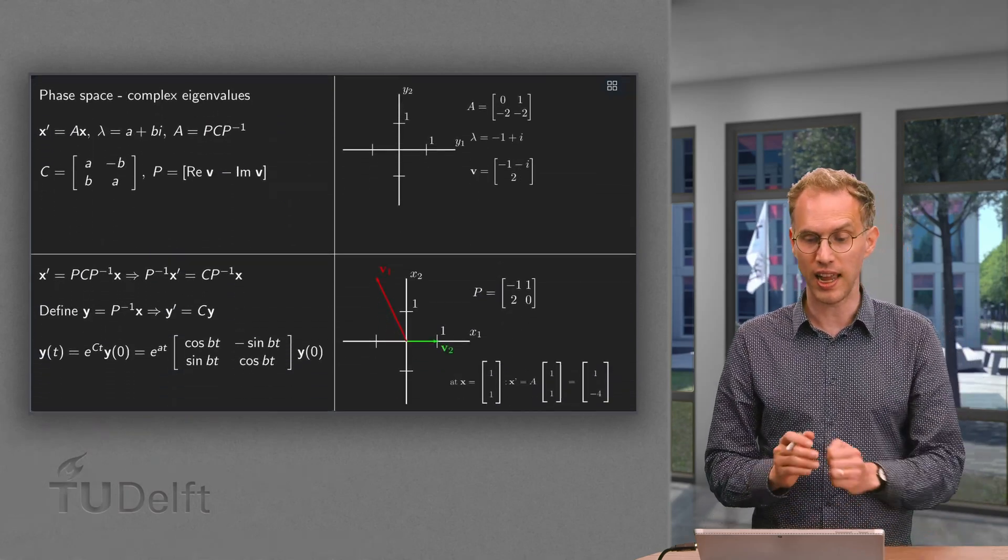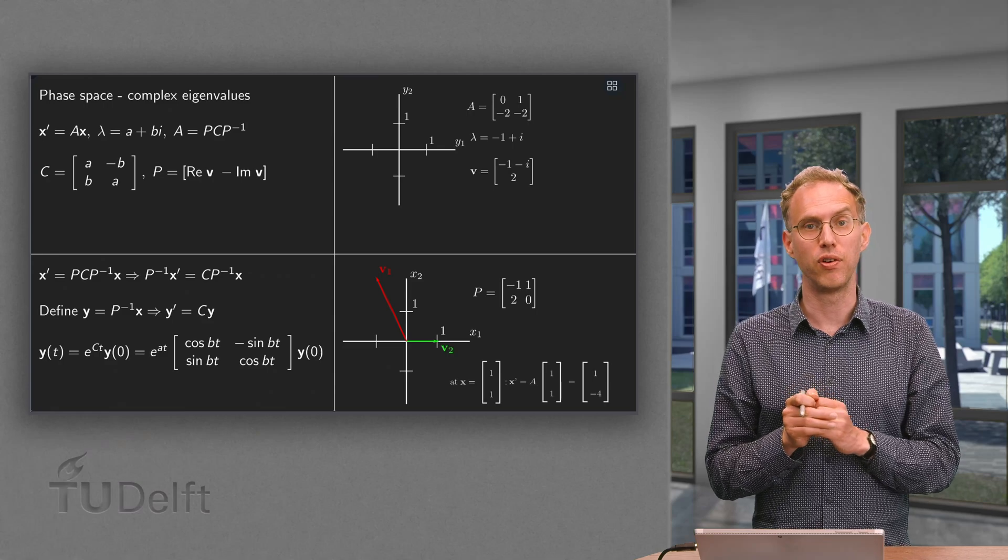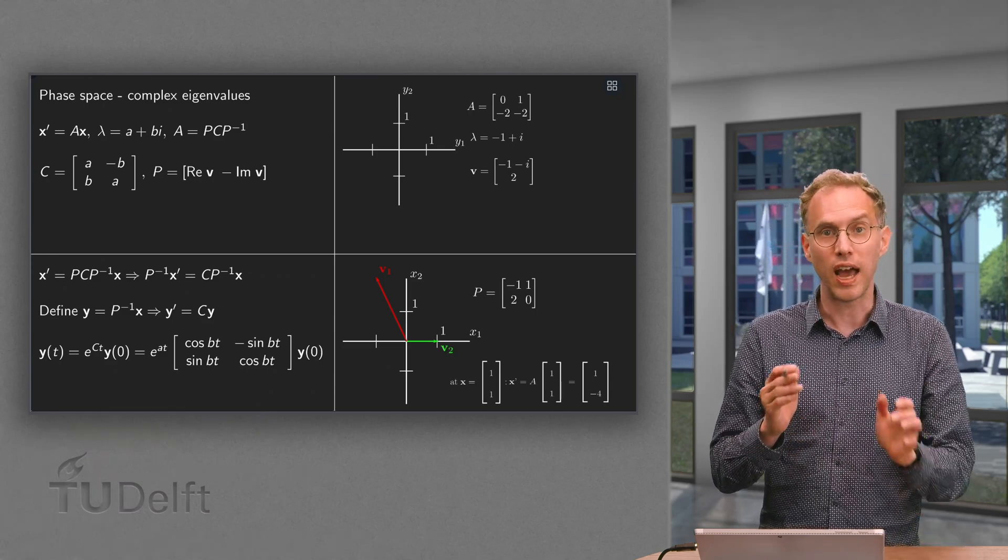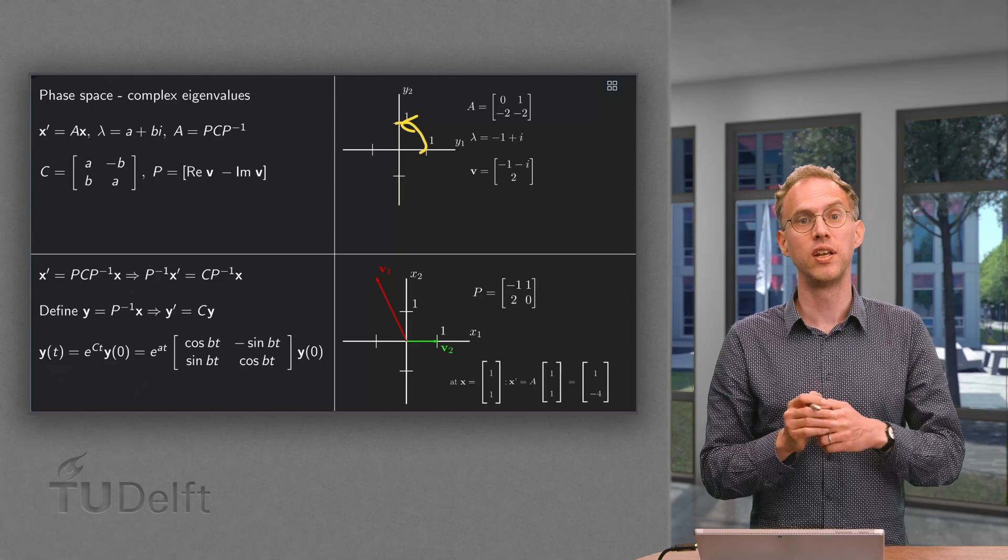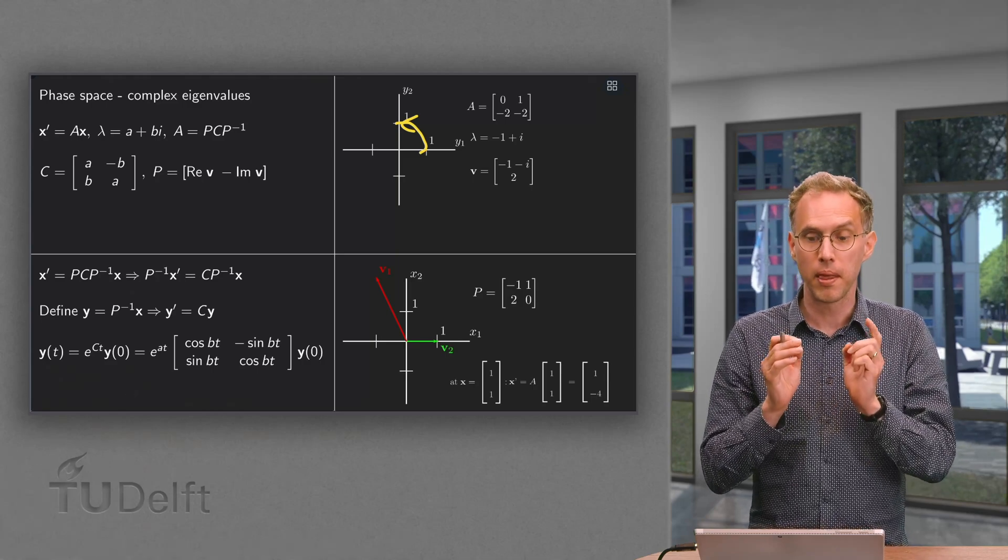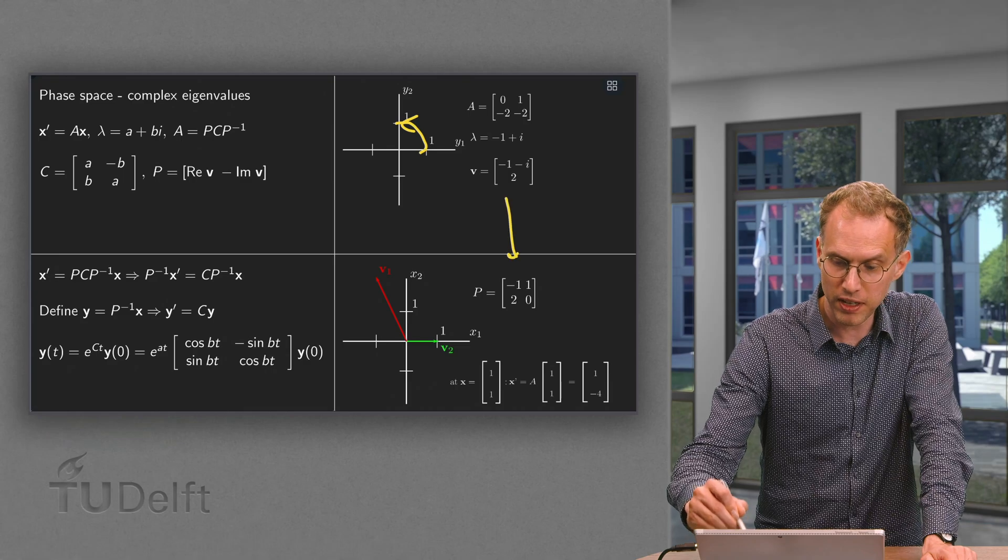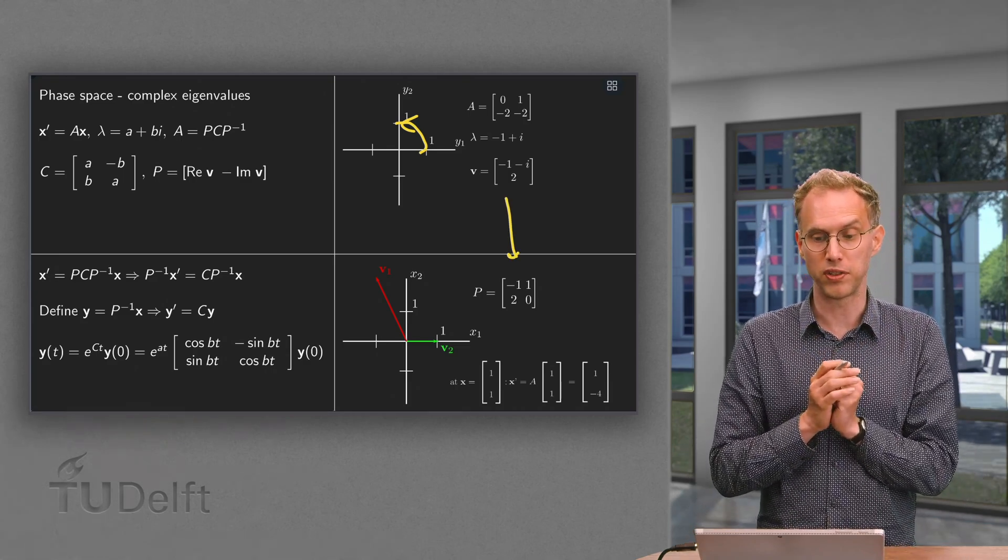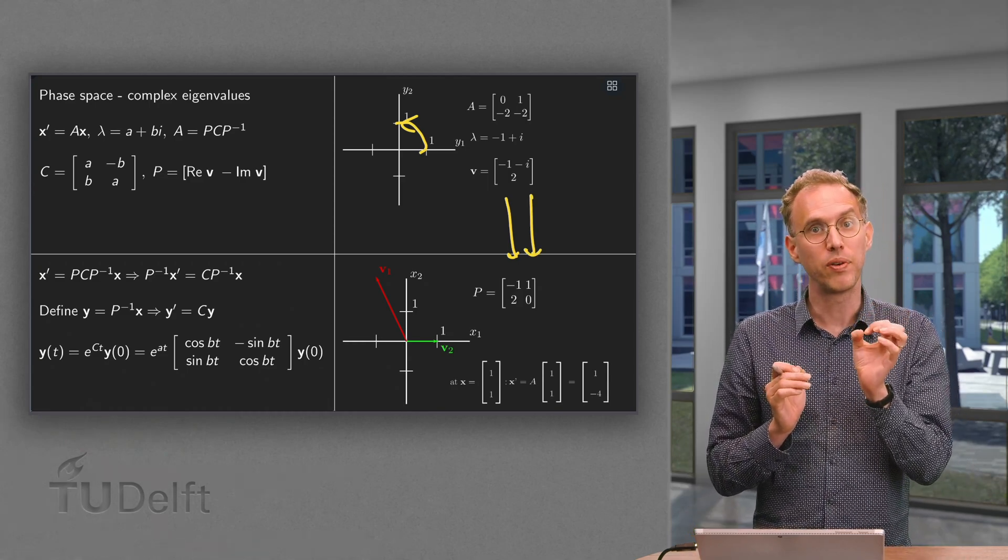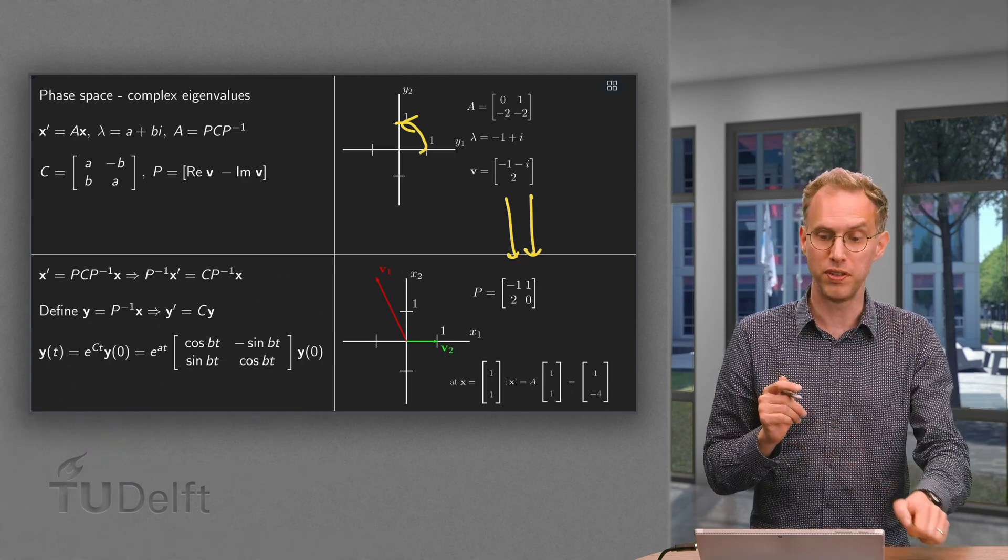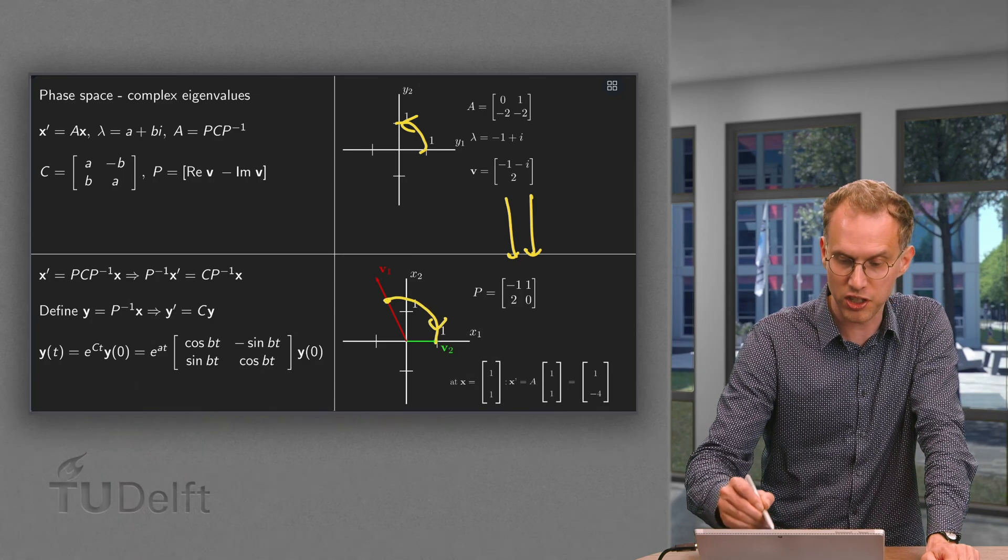So what happens then in the original x variables? Well, we are still rotating towards the origin. But now we have to be a bit careful. Are we going clockwise or counterclockwise? So what happened in the y case? We went from the positive y1 axis to the positive y2 axis because we are rotating counterclockwise. Now we sketch our vectors v. Our vectors v are the vectors in the p matrix. So p contains the real part of v, so minus 1, 2, and minus the imaginary part of v, so 1, 0 in this case. So we sketch v1 and v2. And now we are rotating from the positive v1 axis to the positive v2 axis. So in this case that would mean we start somewhere at the positive v1 axis and we rotate towards the positive v2 axis, so in this direction.